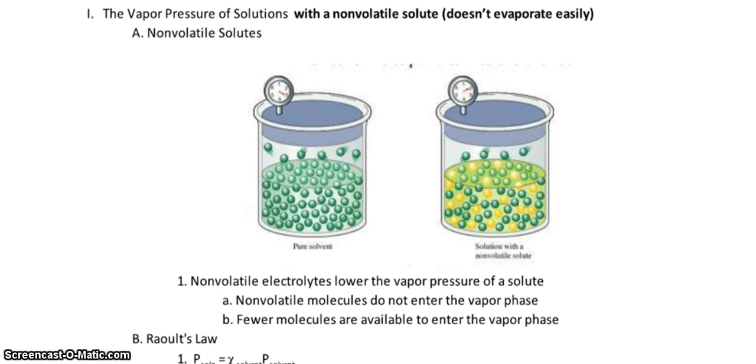If you remember, it takes thousands of degrees to boil an ionic substance. The salt will not be in the gas phase. So the only thing that can be is the solvent. And notice that by adding the solute into the right-hand beaker, there are fewer molecules that are available to enter the vapor stage.